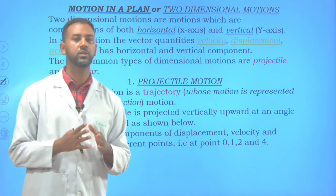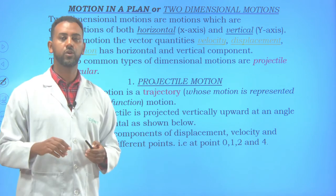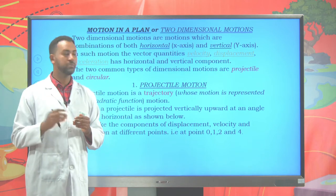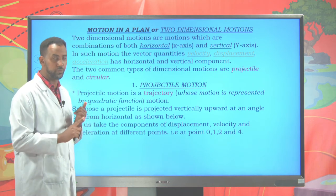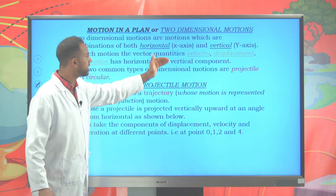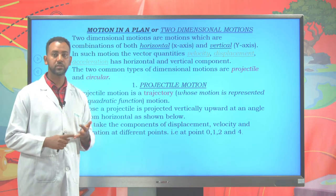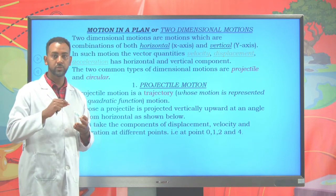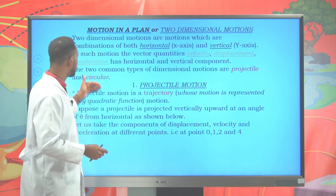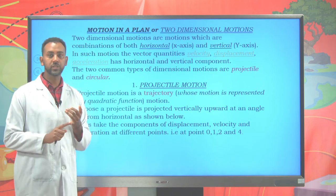Now let's examine two-dimensional motion, or motion in a plane. So far we have discussed one-dimensional motion — either horizontal or vertical. In two-dimensional motion, the object moves in both directions, having both horizontal (x-axis) and vertical (y-axis) components. Displacement, velocity, and acceleration all have horizontal and vertical components. The two important types of two-dimensional motion are projectile motion and circular motion.